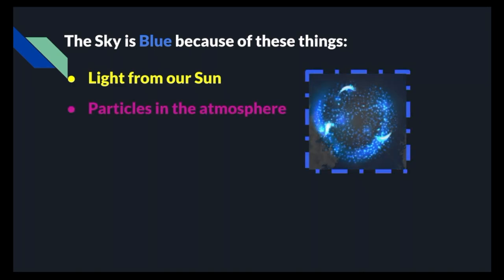Secondly, we have learned about the particles in the atmosphere, mostly molecular oxygen and molecular nitrogen, which get struck by those wavelengths in the atmosphere, which again creates Rayleigh scattering.